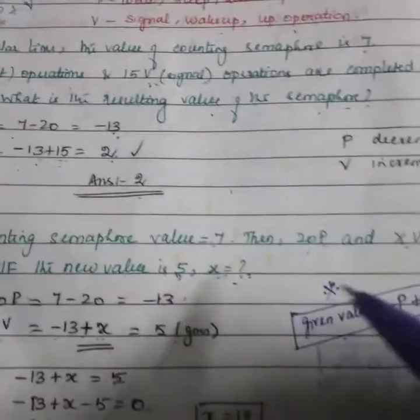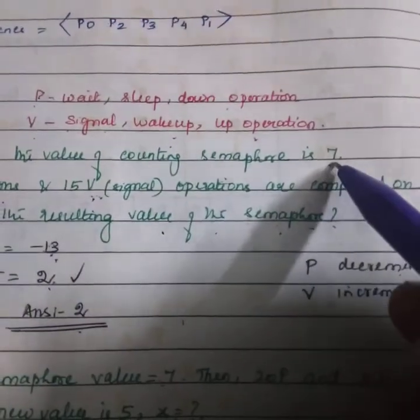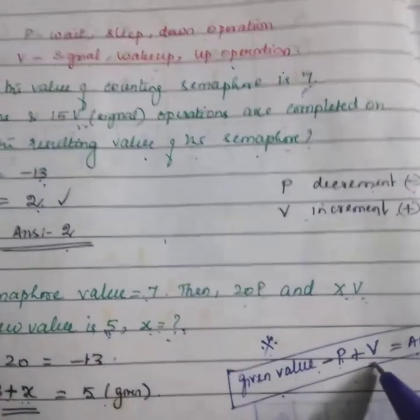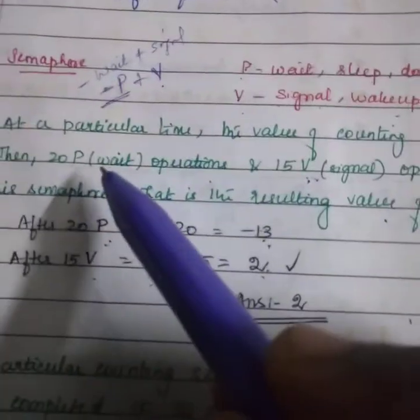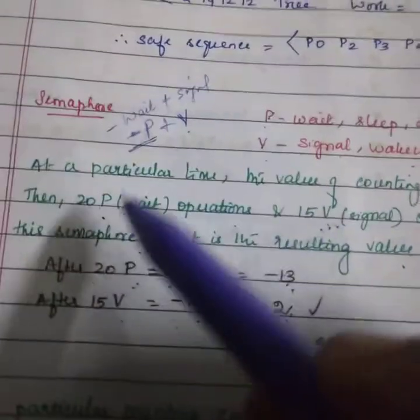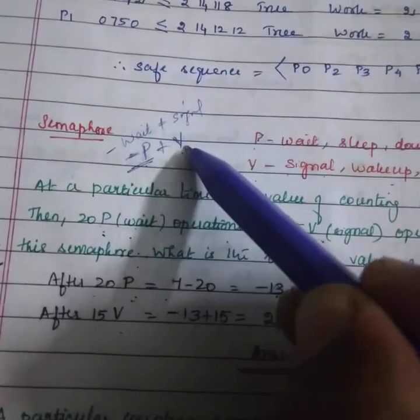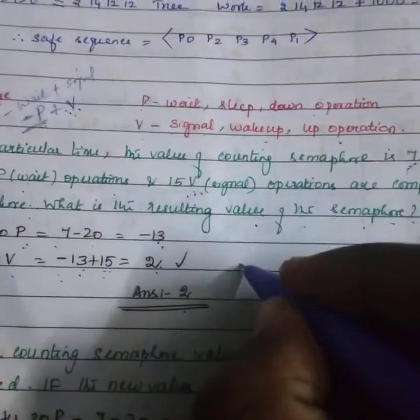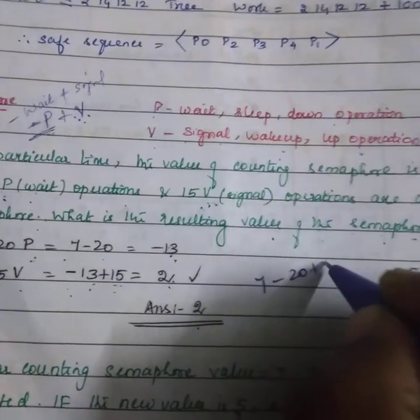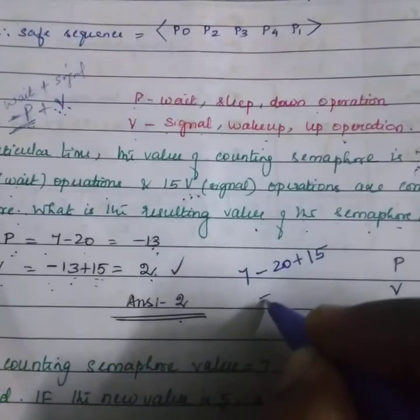For example, take this: Given value is 7, 7 minus P plus V. What is P? 20 plus V. Always minus P plus V. Already I have told. So 7 minus 20 plus 15. What is the answer? 2.